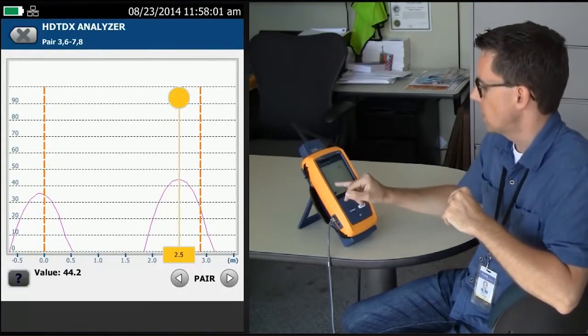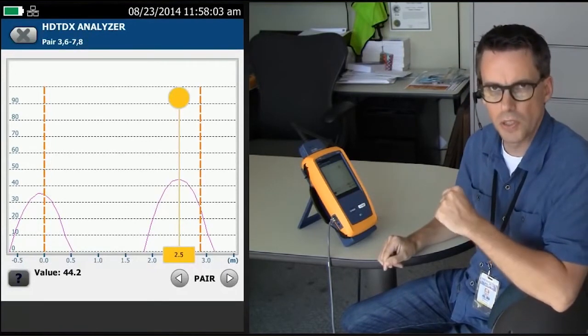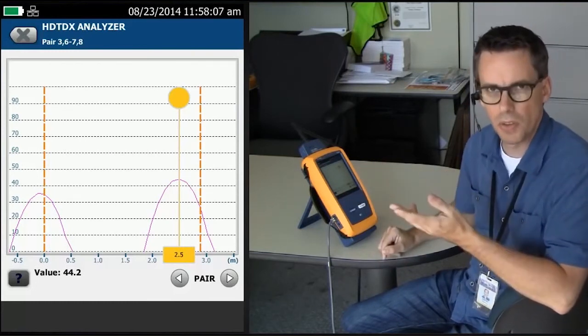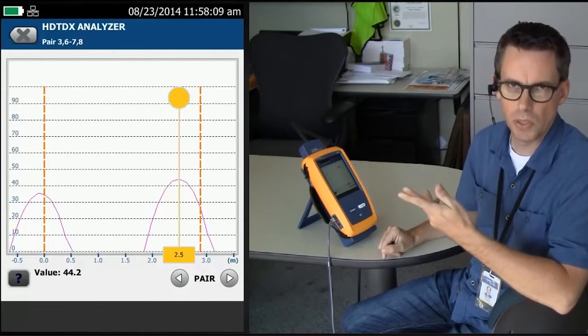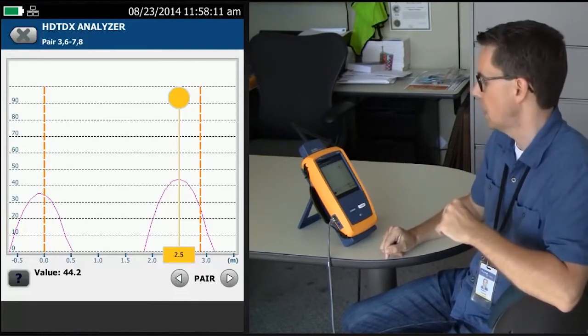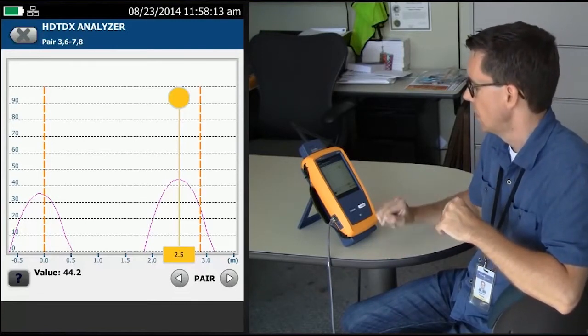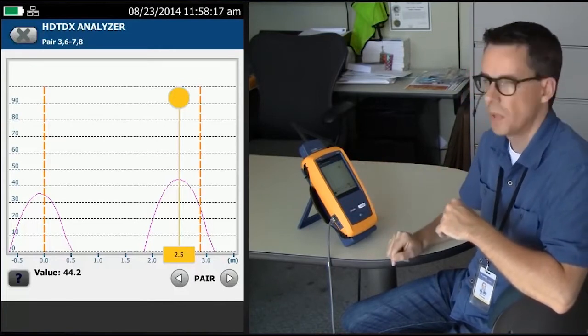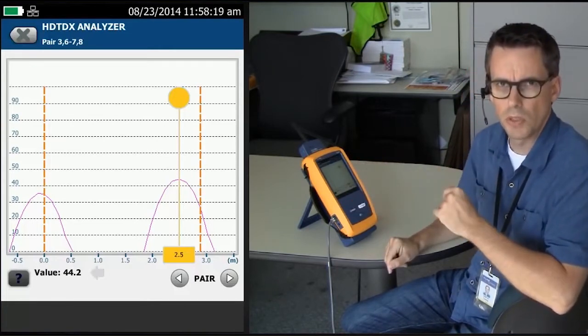So I'm seeing two spikes here. The first spike is my first connection at 0 feet, 0 meters. My second spike is my connection at the other end of this very short link, 2.7 meters, around about 8 feet. The cursor has automatically gone to the largest source of crosstalk, and it's given me a value of 44.2%.